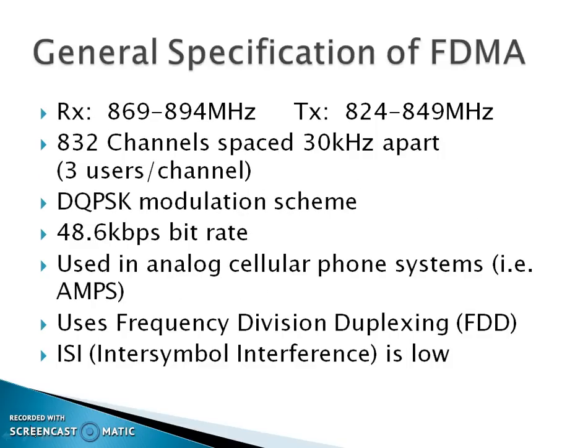Now, FDMA — Frequency Division Multiple Access — specifications: receiver frequency is 869 to 894 MHz, and transmitter is 824 to 849 MHz. Channel spacing is 832 channels, which are 30 kHz apart, meaning three users per channel. The modulation scheme is DQPSK, and the bitrate is 48.6 kbps. It is used in the analog cellular phone system AMPS, and it uses FDD. ISI — inter-symbol interference — is very low in FDMA.